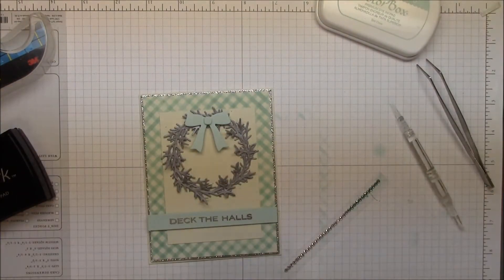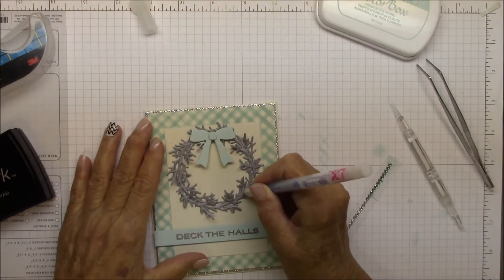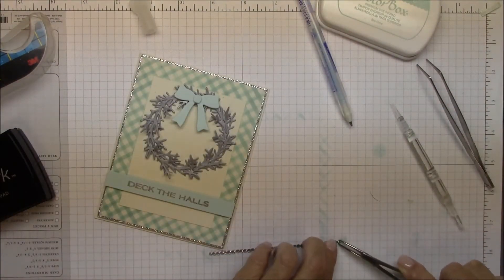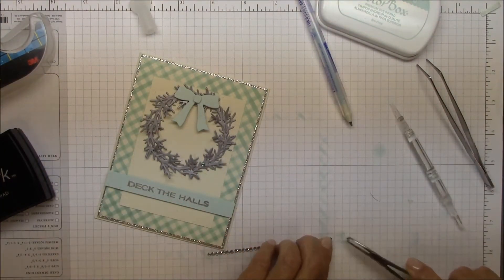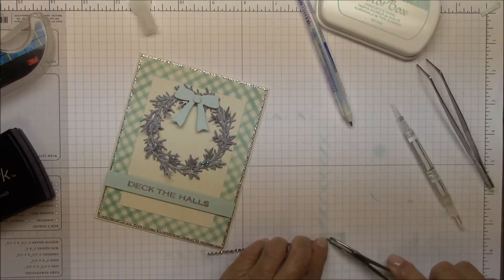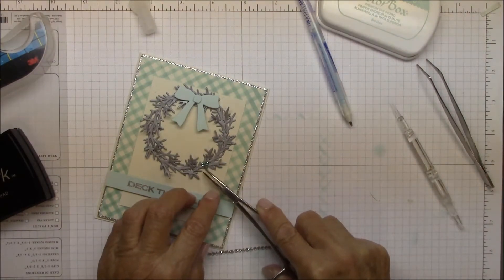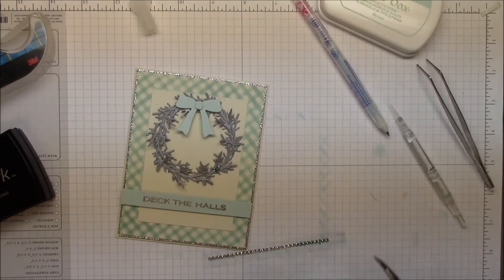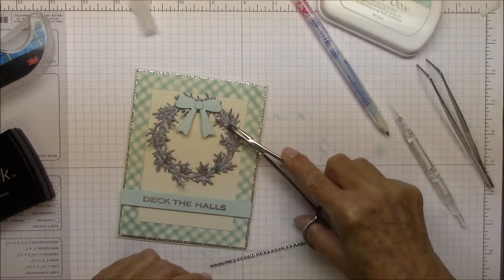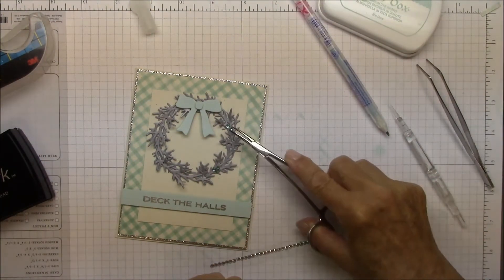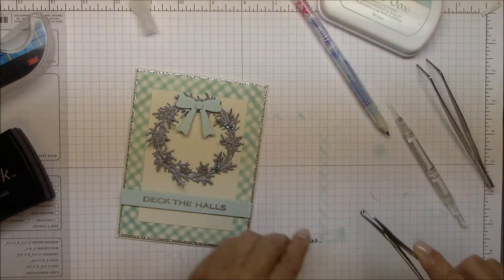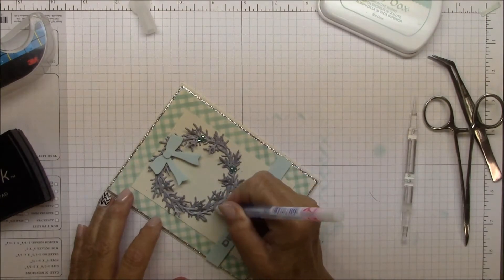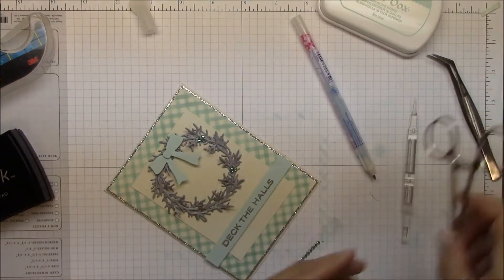Next I'm going to add some gems. I've already colored some with Copic marker. A tip for that, once you start to color, you'll find that you have to use a darker color than you might have imagined, because on the gems or even pearls, it will come out lighter than the marker looks. So start with a lighter color, but you'll find that you might have to go darker. And now I'm just going to apply them with some glue from my Quickie glue pen.